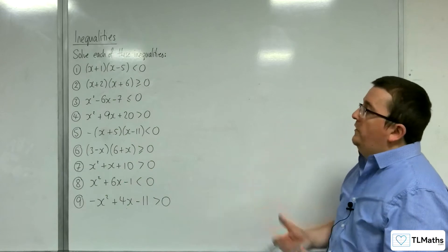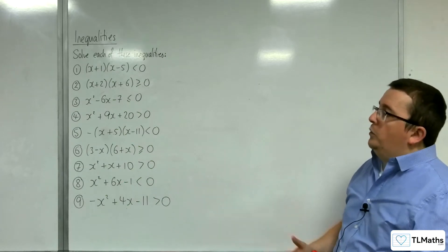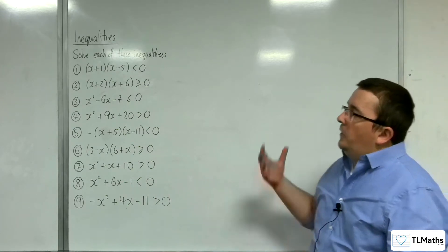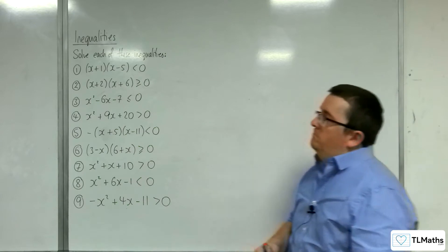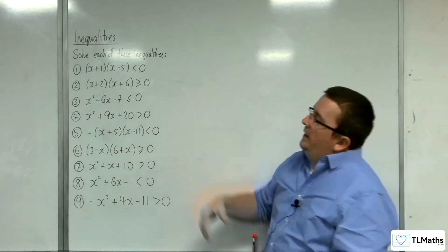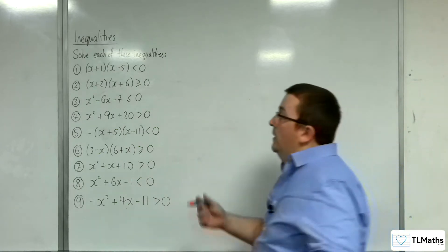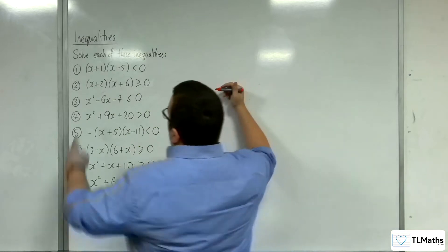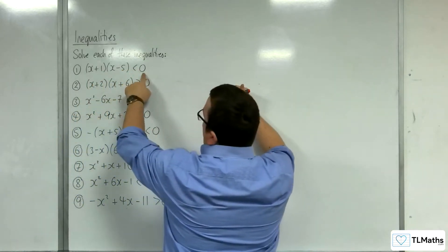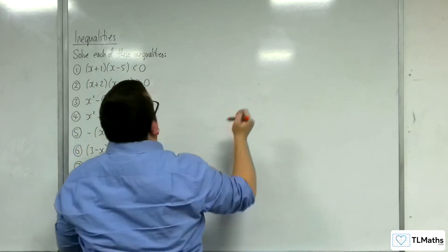In this video I'm going to go through nine examples of solving quadratic inequalities. Number one: (x+1)(x-5) < 0. It's in factorised form with 0 on the right-hand side, so it's all ready to go.